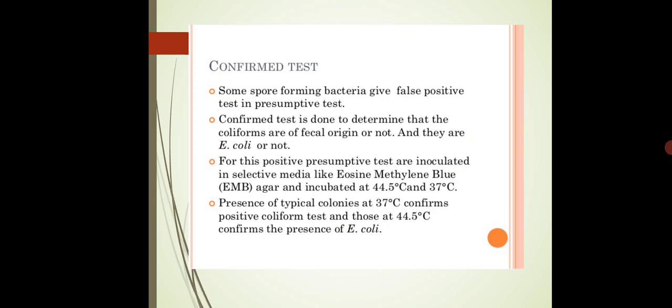If there is a spore-forming bacteria present in the water sample — which we have analyzed in the presumptive test — those spore-forming bacteria can give false positive results and divert them. So to confirm the results we got from fecal coliforms, we have the confirmed test. The confirmed test is done to determine or confirm the presence of E. coli or fecal coliforms — coliforms that are fecal in origin, meaning from human or animal excretory waste.